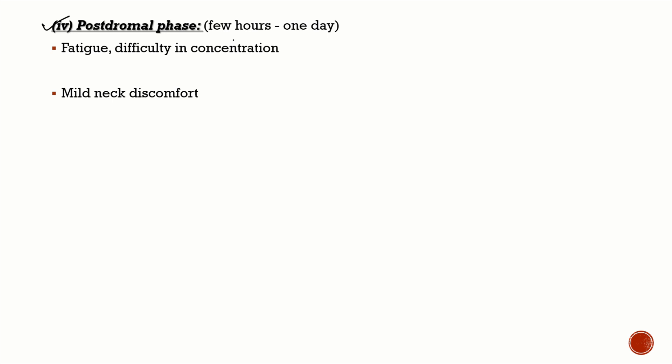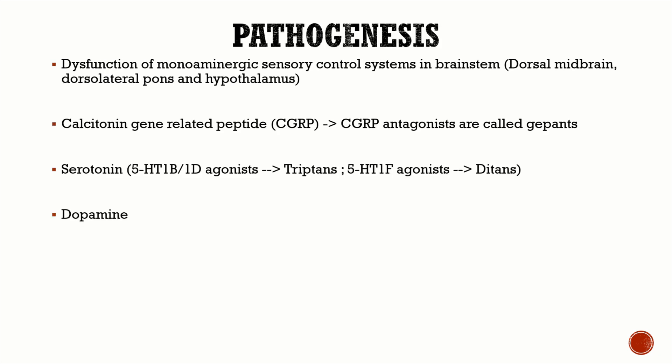After the headache subsides, the patient enters the postdromal phase, lasting a few hours to around one day. Symptoms include fatigue, difficulty in concentration, and mild neck discomfort. Remember that the aura phase is only present in 20–25% of migraine patients.